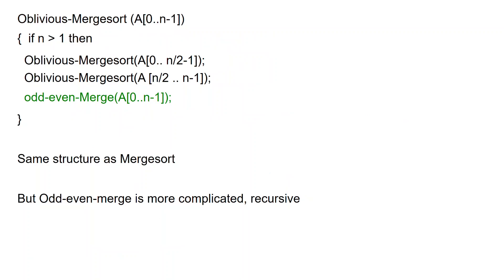Oblivious merge sort works as follows. Again, if the length of the array is only 1 then it's already sorted and we are done. Otherwise, we are going to sort the first half of the array then the second half of the array and we are going to merge these two halves. This is exactly the same structure as merge sort but the difference is that instead of using the merge operation that we saw earlier we are going to see a fancier version of merge which is called odd-even merge